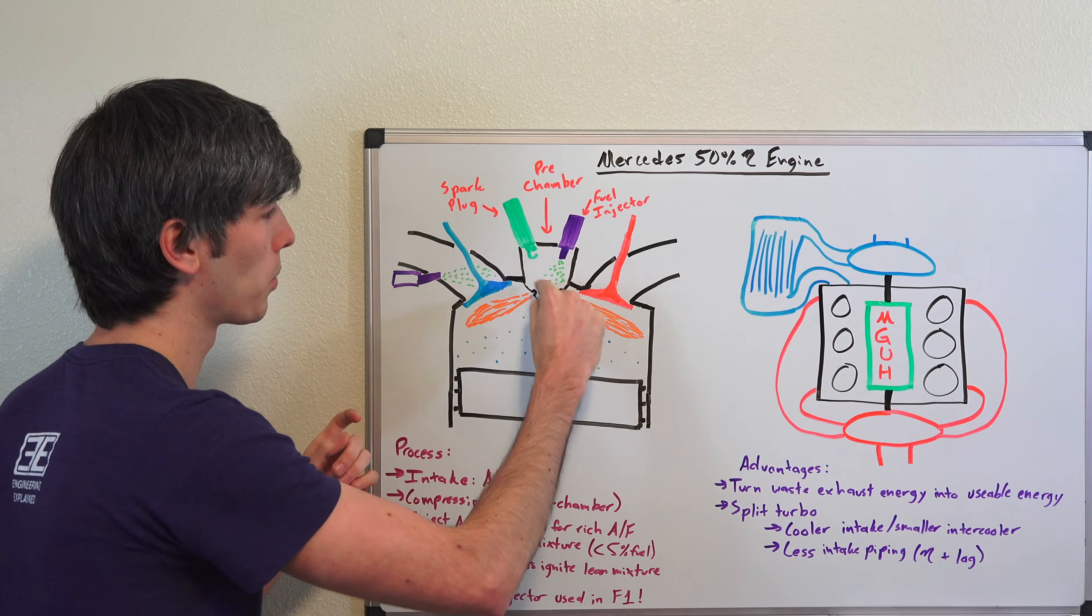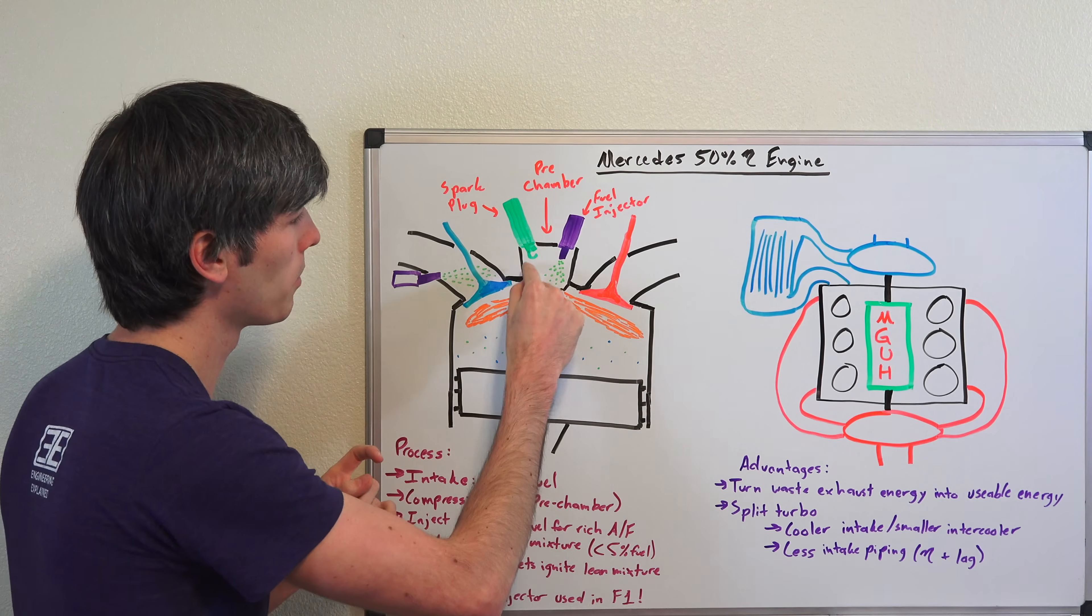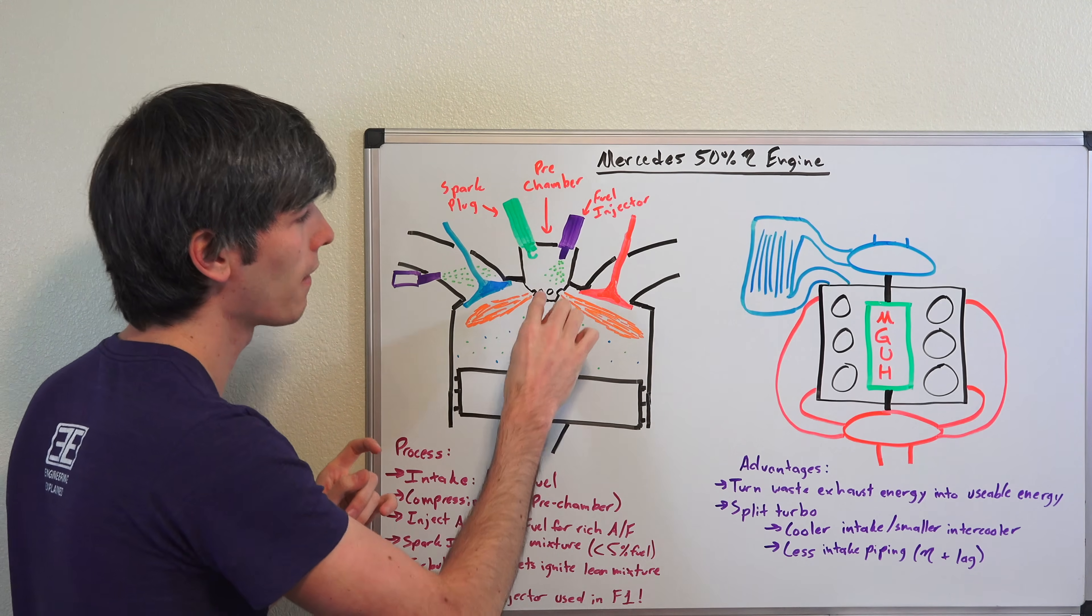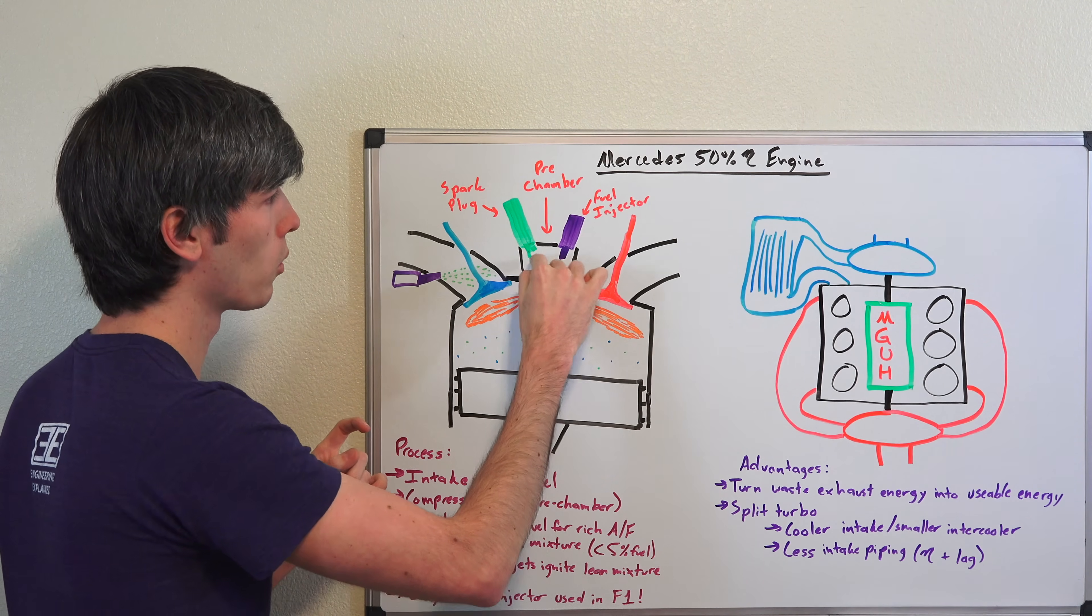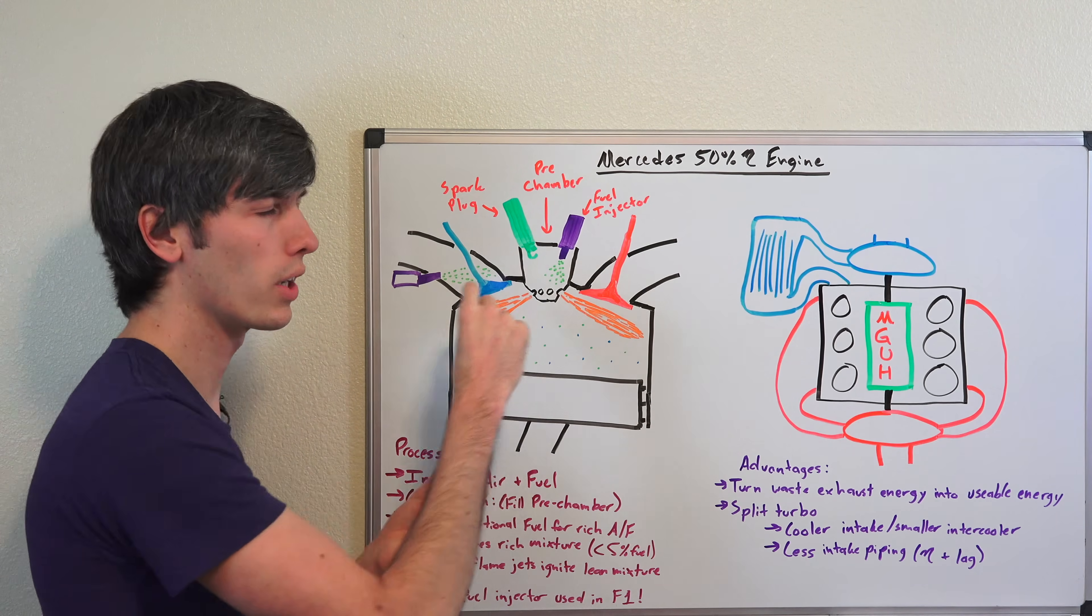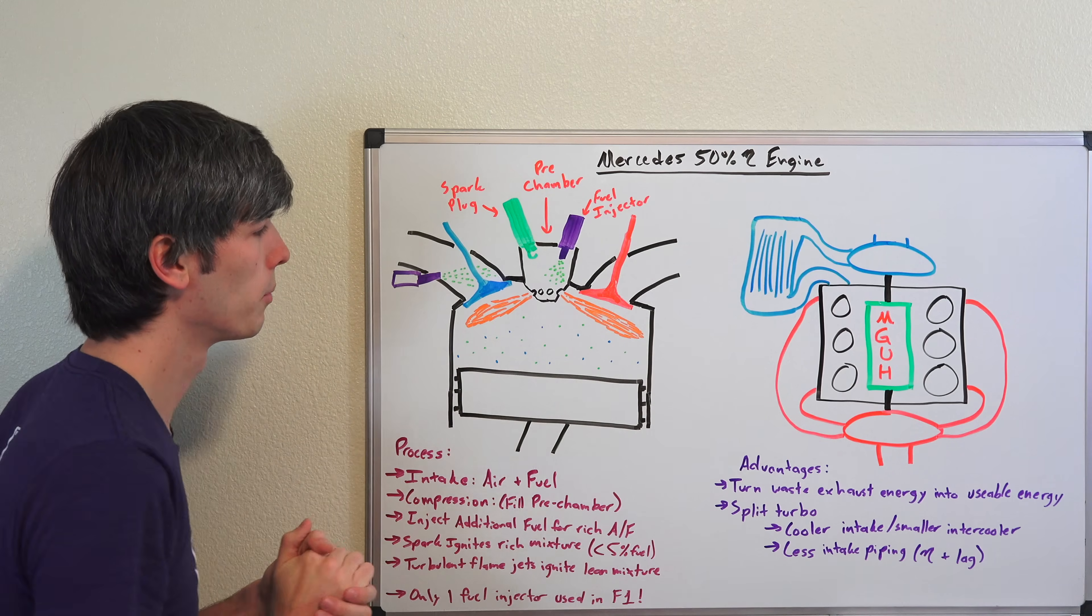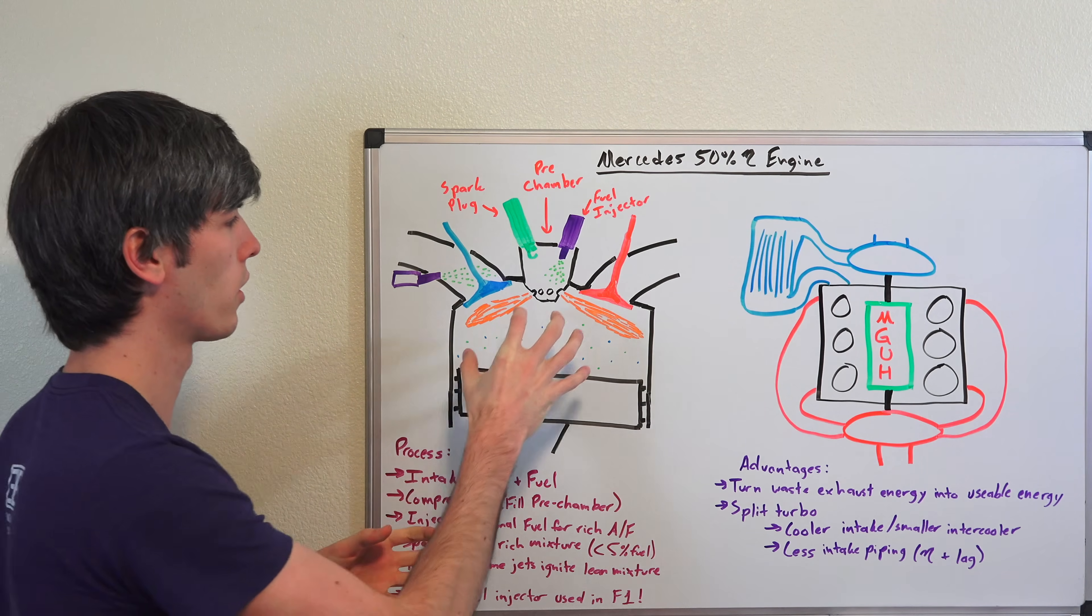Now keep in mind the ratio of fuel within this pre-chamber, things aren't necessarily proportionally drawn here. It's going to be about 3% less than 5% of the total amount of fuel will be within this pre-chamber compared to the rest of it. So though it is rich, it's a very small portion of the fuel. So overall you have a huge benefit from using this lean air fuel mixture.